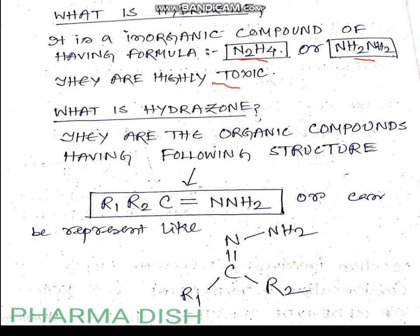Hydrazones are organic compounds having the following structure: R1R2C=N–NH₂. In this structure, the carbon is double-bonded to nitrogen, that nitrogen is directly attached to an amino group (–NH₂), and the carbon is attached to two different groups R1 and R2.